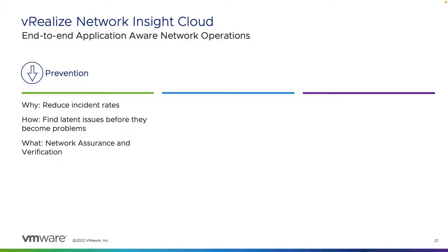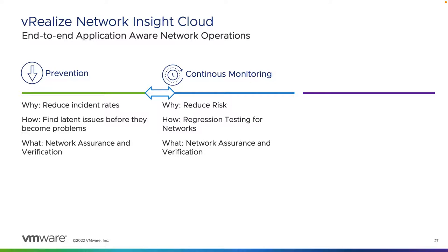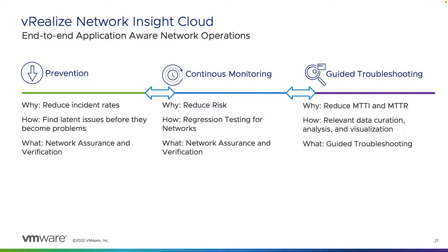The vRealize Network Insight Day 2 Ops team is focusing on four key areas to enable application-aware network operations: prevention, continuous monitoring, troubleshooting, and collaboration. You've already seen prevention and continuous monitoring in the network assurance and verification feature set previously. The main goal is to reduce incident rates and risk to the organization by finding latent issues before they become problems and performing continuous regression testing to catch mistakes as the network changes.